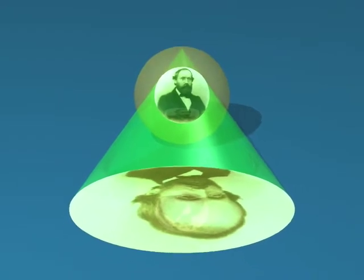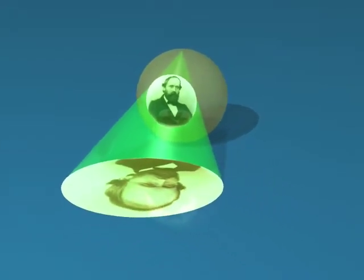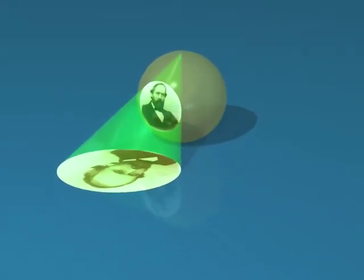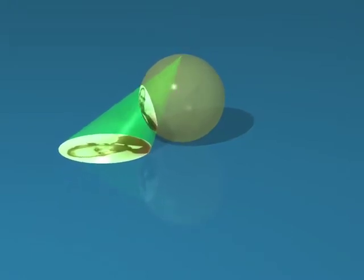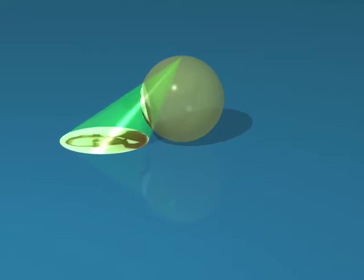We have seen that the stereographic projection sends circles on the sphere, not going through the pole, to circles in the plane. And now we are going to prove it.